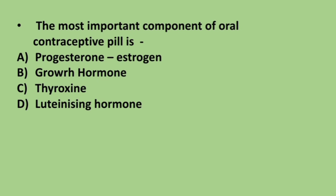Component of oral contraceptive pill is — progesterone, estrogen, growth hormone, thyroxine, or luteinizing hormone? The correct answer is option A, progesterone and estrogen. Please tell me in the comment section how many questions came from all these questions.